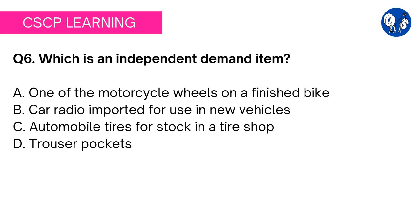Option A: one of the motorcycle wheels on a finished bike — this is absolutely wrong, since a bike is incomplete without wheels, so wheels have a dependent demand. Option B: car radio imported for use in new vehicles — absolutely wrong. It is specifically mentioned that the radio was imported for use in new vehicles, which makes it a dependent demand. If it were imported for vehicles generally, it could be considered independent demand since a shopkeeper could also sell it as a separate finished product. The keyword 'new vehicles' differentiates between dependent and independent demand.